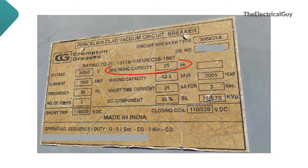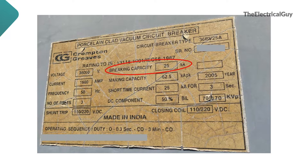Next is breaking capacity — it is the highest RMS value of short-circuit current which the circuit breaker is capable of breaking. This is also called rated short-circuit current or symmetrical breaking current. This breaker is capable of breaking 25 kA.